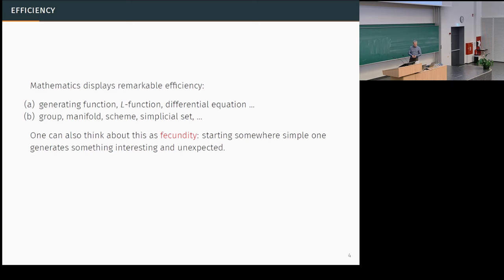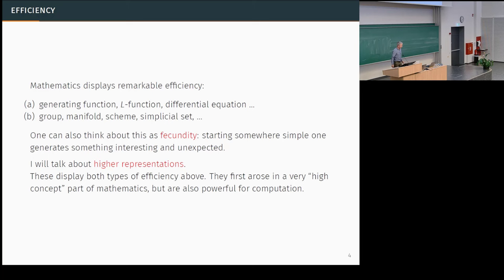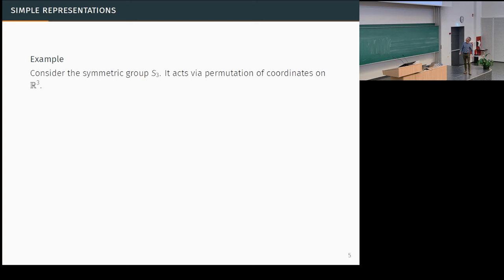This is the fecundity of the mathematical world, and I think many of the talks in this panorama have demonstrated this fecundity. What I want to talk about are these things called higher representations — the analog in category theory of a representation. These display both types of fecundity. Higher representations emerged in subjects like geometric Langlands and these very high-concept subjects, and they're very useful both conceptually and from a computational point of view.